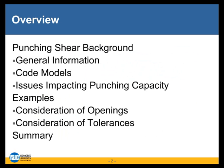I'd like to start out by giving you all just a brief overview of what we're planning to talk about. I want to talk about the background of some of the punching shear issues in the code — beginning with some general information about punching shear, the code models, issues impacting the punching shear capacity of columns and flat plates, how openings can be considered and their impact, how tolerances may want to be considered and their impact, and then a recap of what we've covered.